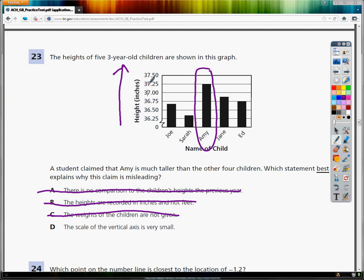So she's really not that much taller. It's just that the scale is so small that you can't really tell anything by looking at the graph. So the answer to number 23 is D.